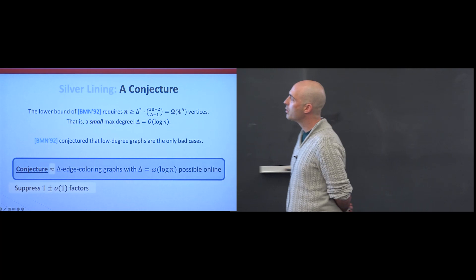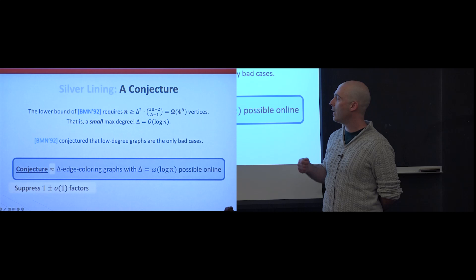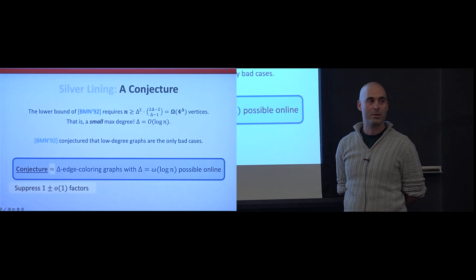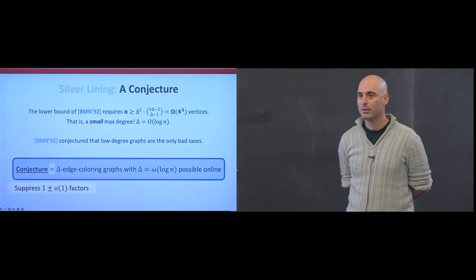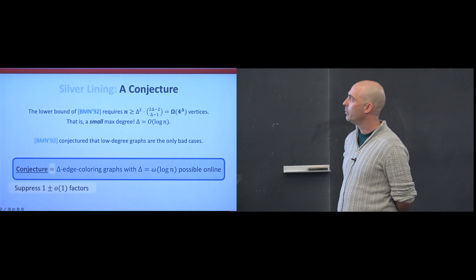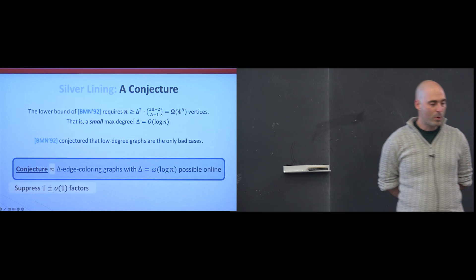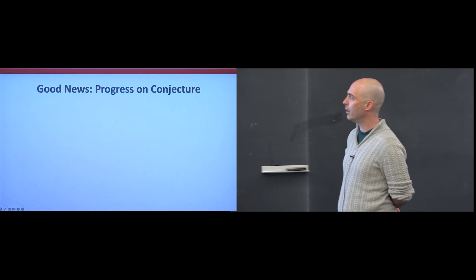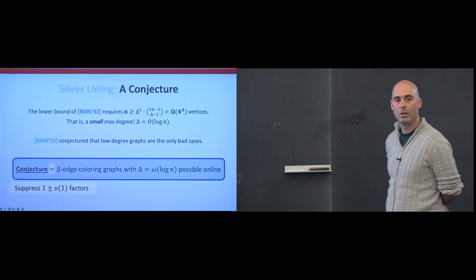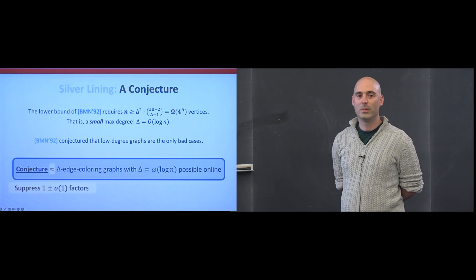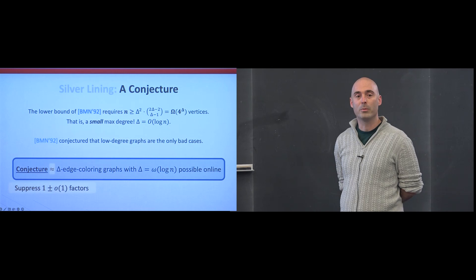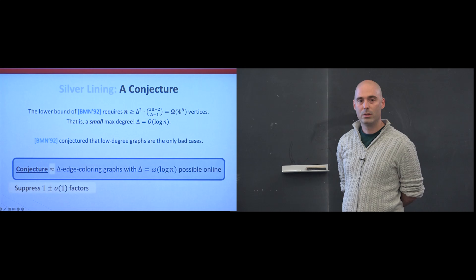This lower bound reads as a Δ plus log n lower bound. So if Δ is super-logarithmic, this is consistent with a Δ plus o(Δ) many colors. There's been quite a lot of progress on this conjecture over the years. The conjecture is just that there exists an algorithm — probably randomized, as they likely conjectured — that can get roughly Δ colors for super-logarithmic max degree.